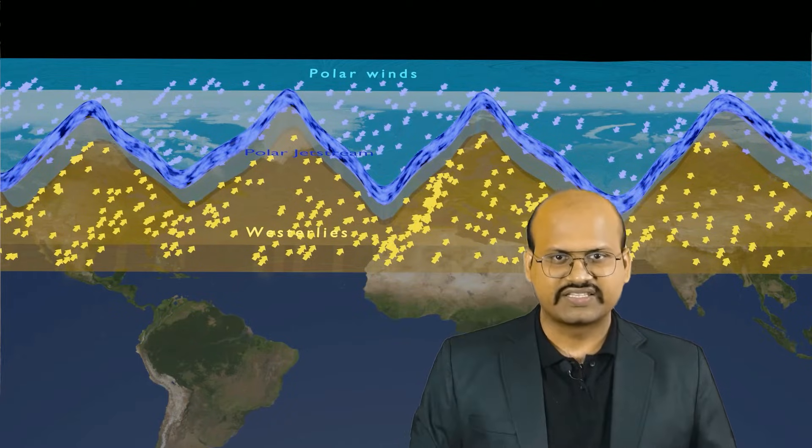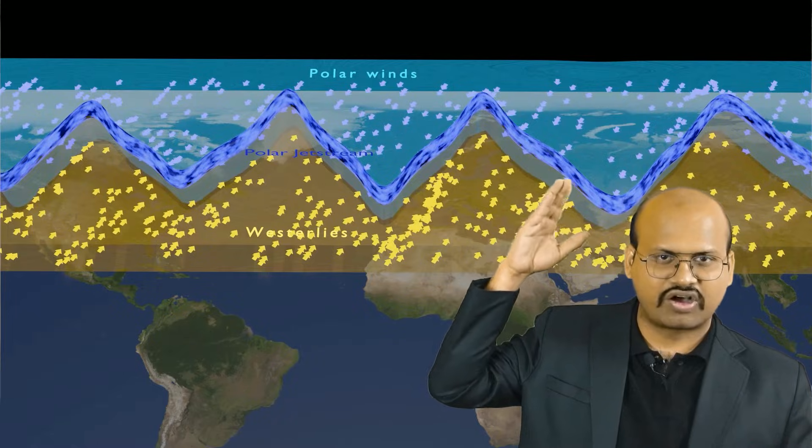This is the interaction zone along the jet streams. If we take one such intersection, we can see that here we have a warm air mass, here we have a cold air mass, and in the middle we have the jet streams. Because of the jet streams, we see the formation of some disturbance.